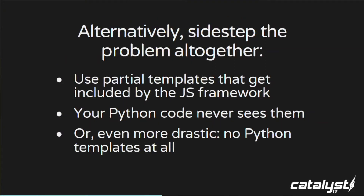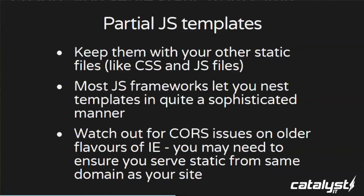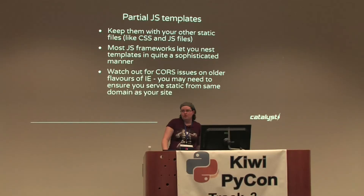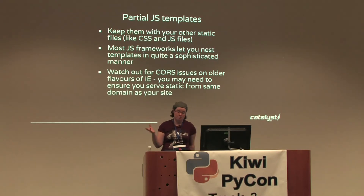A better solution if you're stuck is that a lot of JavaScript frameworks support partial templates — separate HTML files the JavaScript framework fetches, which Python never sees at all. You can even go beyond that and have no Python templates at all. Keep these partial JavaScript templates with your other static files like your CSS and JavaScript. You can often nest them and use different snippets — they're quite sophisticated engines for that.